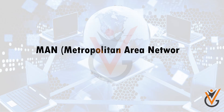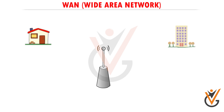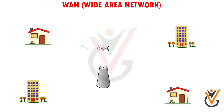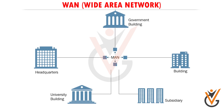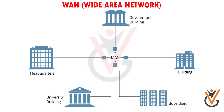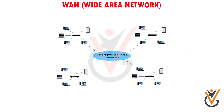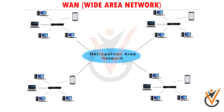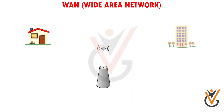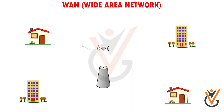A Metropolitan Area Network is a network that covers a larger geographic area by interconnecting different LANs to form a larger network. Government agencies use MAN to connect to citizens and private industries. In MAN, various LANs are connected to each other through a telephone exchange line. It has a higher range than a Local Area Network.